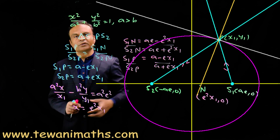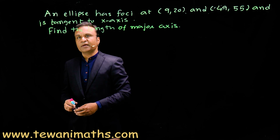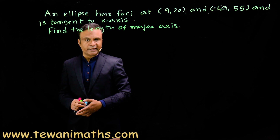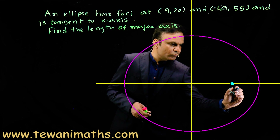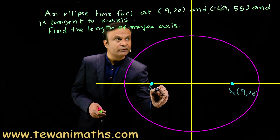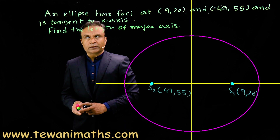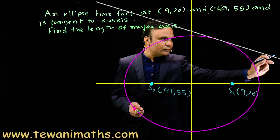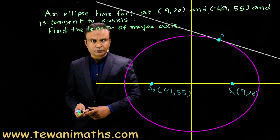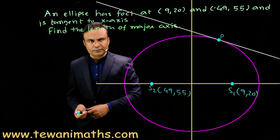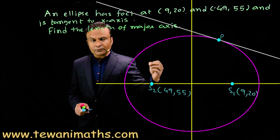Now let us try one question based on this property. An ellipse has foci at (9, 20) and (49, 55) and is tangent to the x-axis. Find the length of the major axis. First we draw the ellipse: foci are S1 with coordinates (9, 20) and S2 with coordinates (49, 55). The ellipse is tangent to the x-axis, and the point of contact is P on the ellipse. We use the definition of the ellipse that the sum of focal radii of any point on the ellipse is 2a, where a is the length of the semi-major axis.